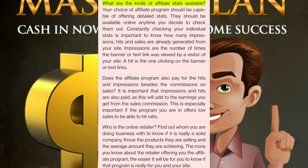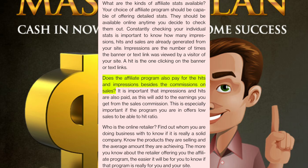What are the kinds of affiliate stats available? Your choice of affiliate program should be capable of offering detailed stats available online anytime. Constantly checking your individual stats is important to know how many impressions, hits, and sales are generated from your site. Impressions are the number of times the banner or text link was viewed by a visitor; a hit is when someone clicks on the banner or text links. Does the affiliate program also pay for hits and impressions besides the commissions on sales? This is especially important if the program you are in offers a low sales-to-hit ratio.